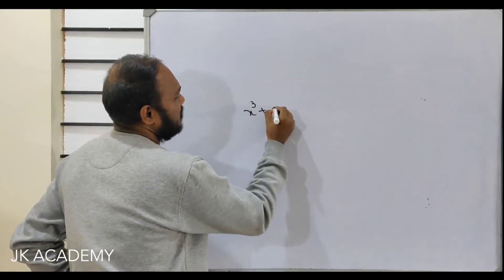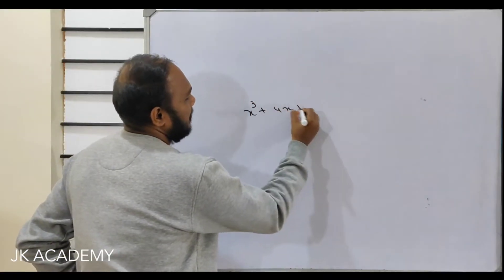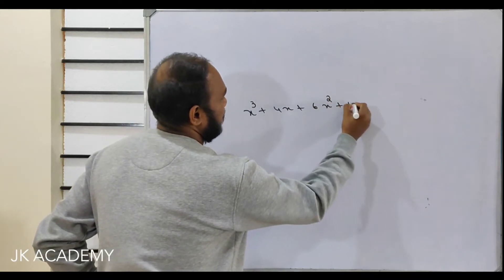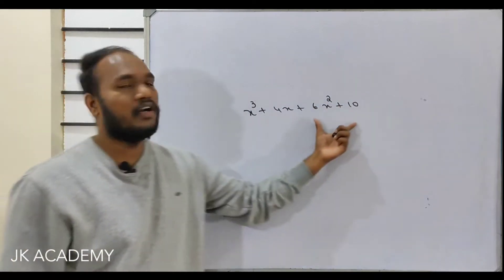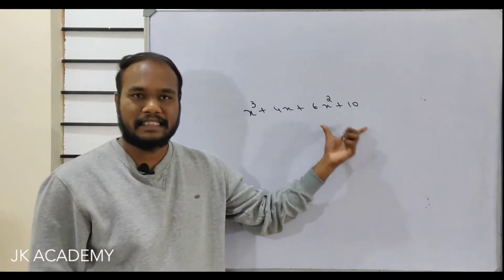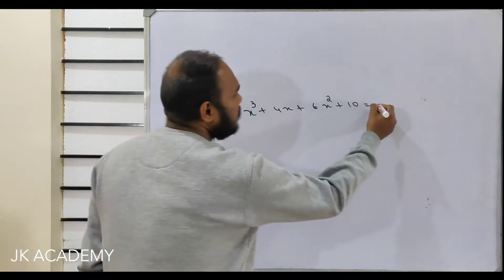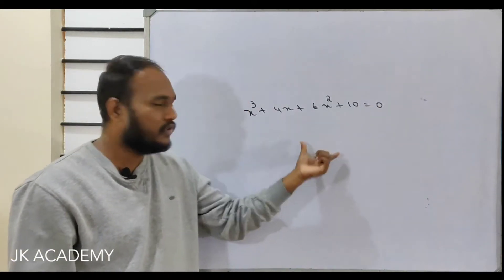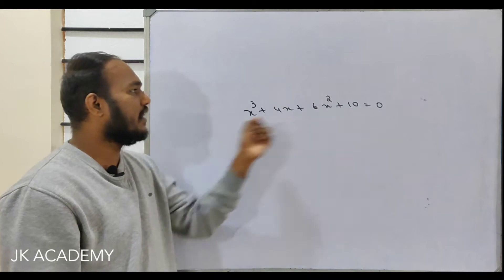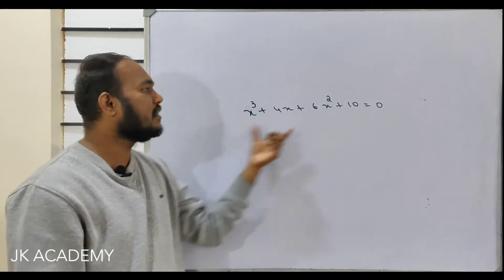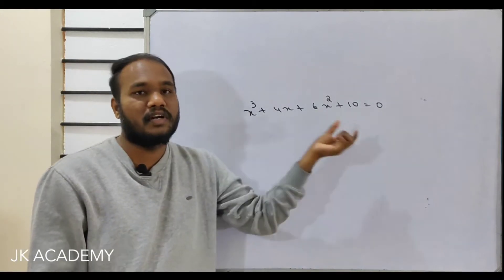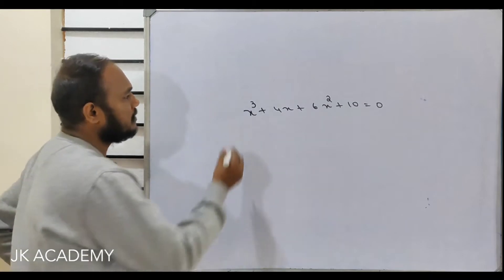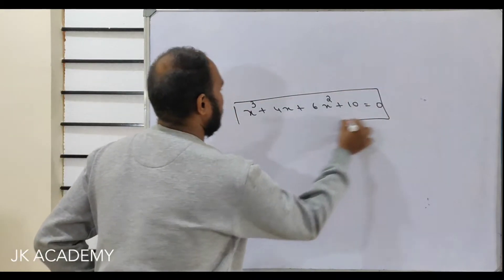x cubed plus 4x plus 6x squared plus 10. This is called a mathematical expression. If we write equal to some zero or some number, this becomes an equation, because if an equals symbol comes into a mathematical expression, we call it an equation.